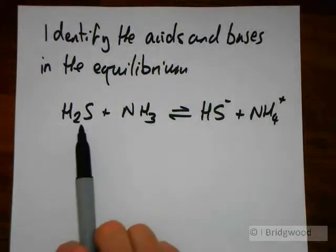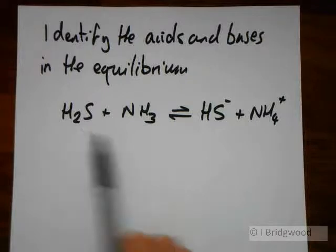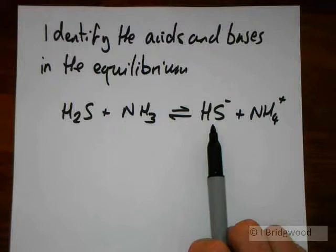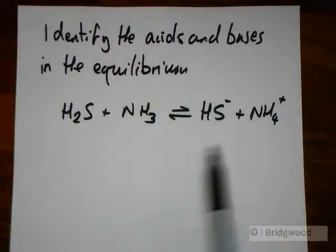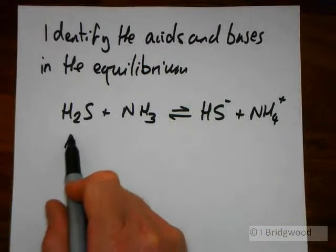Now if you look at H2S to begin with, hydrogen sulfide, you can see that it's essentially going to HS minus. Now that must mean it's losing H plus. It's a proton donor. So that makes that an acid.